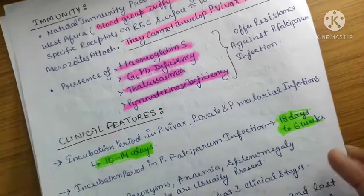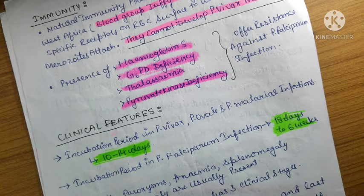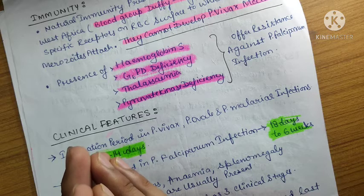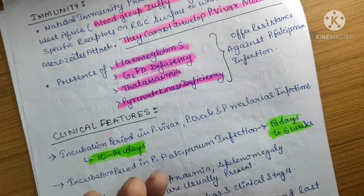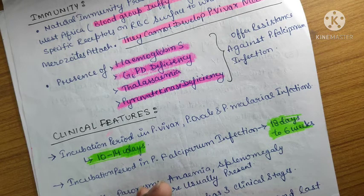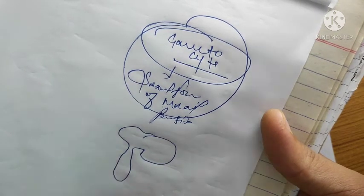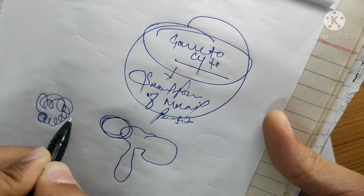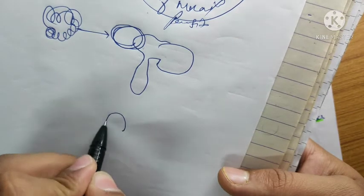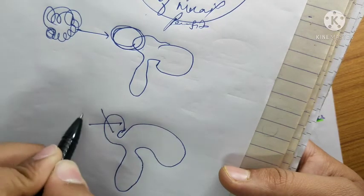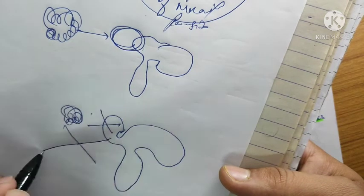Immunity is very important. In terms of natural immunity, individuals in West Africa have the Duffy-negative blood group and have acquired natural immunity against malaria. This is due to the lack of receptors on the RBC surface to which merozoites attach. Without these receptors, the merozoites cannot attach to the RBC.